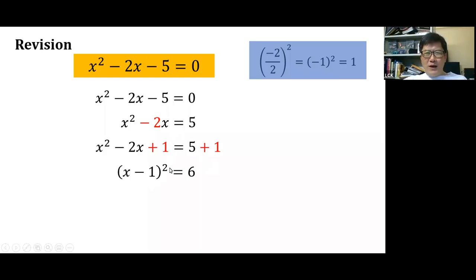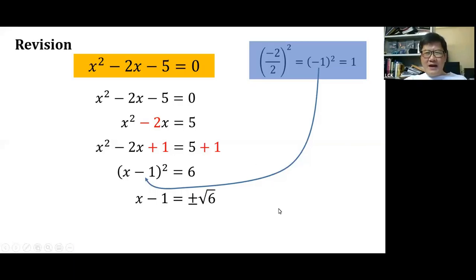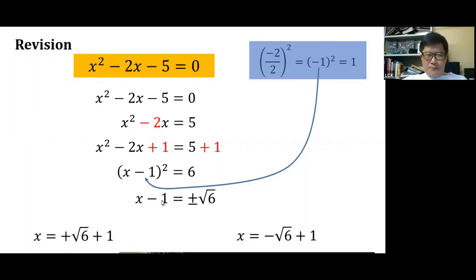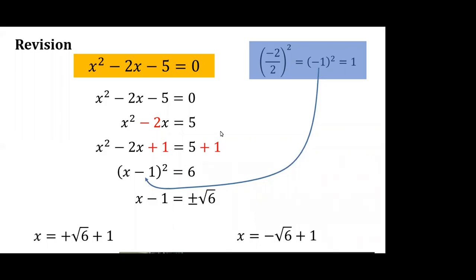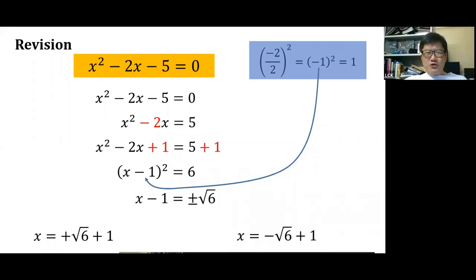We transform the trinomial into (x minus 1) squared. Taking the square root of both sides gives x minus 1 equals plus or minus square root of 6. Our two solutions are x equals plus square root of 6 plus 1, and x equals minus square root of 6 plus 1 — one from the positive root, the other from the negative root.